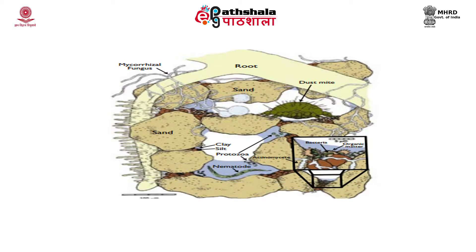Some bacteria carry out very special roles in the soil, such as rhizobia — the nitrogen-fixing bacteria associated with legume roots. Protozoa are mobile organisms that feed on other microbes and soil organic matter. Algae, like plants, photosynthesize and are found variably in the soil.